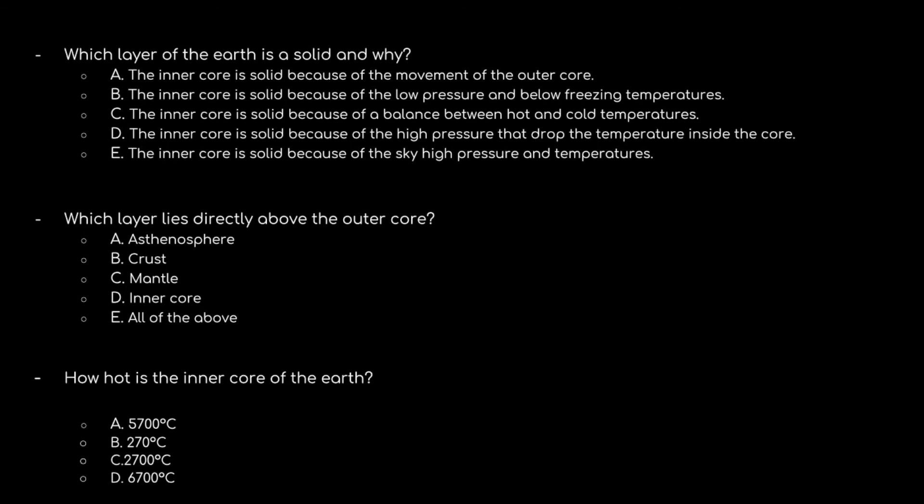How hot is the inner core of the Earth? The options are: A) 5,700 degrees Celsius; B) 270 degrees Celsius; C) 2,700 degrees Celsius; D) 6,700 degrees Celsius. They all have a 7 and a 0, so you need to pick carefully. The correct answer is option D: 6,700 degrees Celsius.